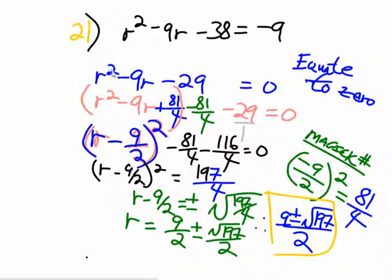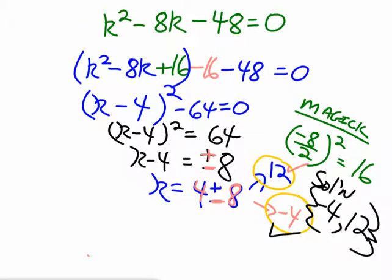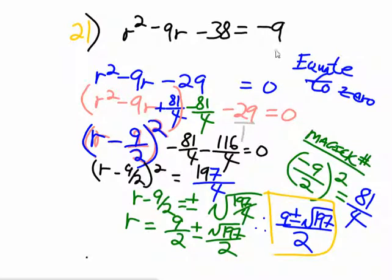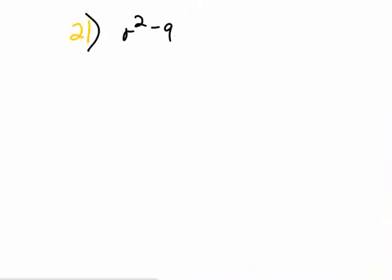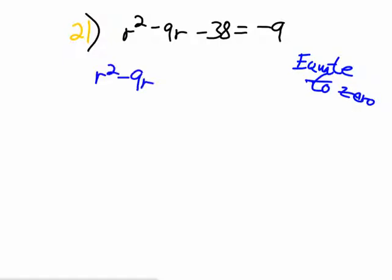Now this one gets nasty. Notice this time everything is not equal to 0 — there's something equal to negative 9. The first step, as it says on your green sheet, is to equate everything to 0. It's not strictly necessary for this particular method, but it's necessary for the other three methods, so just equate it to 0. So we have r² minus 9r minus 38 equals negative 9. Pop the 9 over to the other side by adding 9 to both sides: r² minus 9r minus 29 equals 0. Now I'm going to move the 29 off to the side.